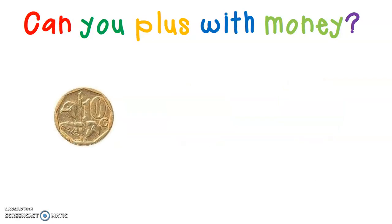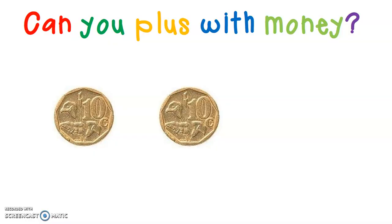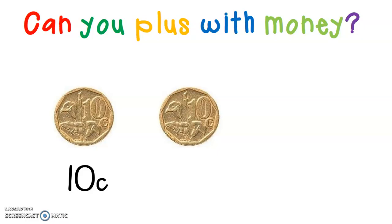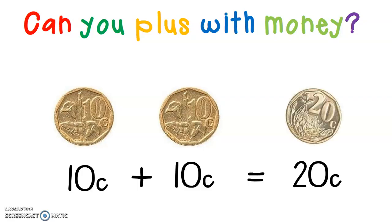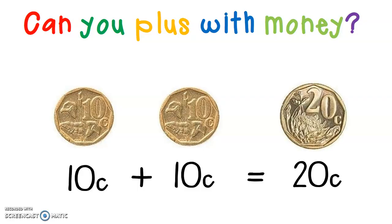Here is a 10 cent coin and a 10 cent coin. I have got two 10 cent coins. So I am going to say 10 cents plus 10 cents equals 20 cents. If I had to combine them, this is what my 20 cent will look like.